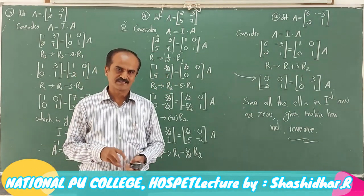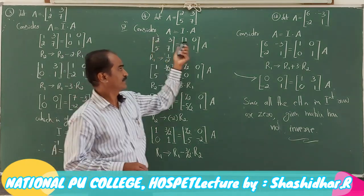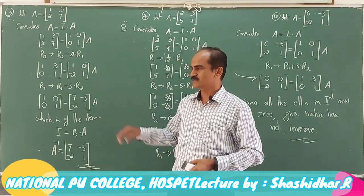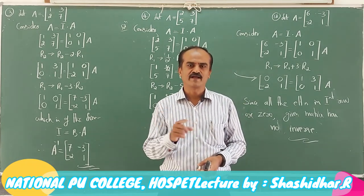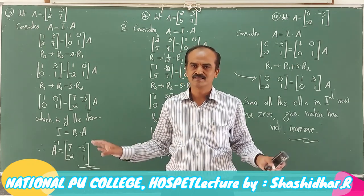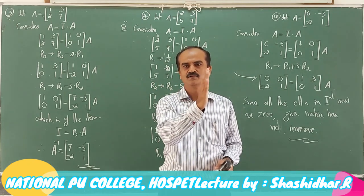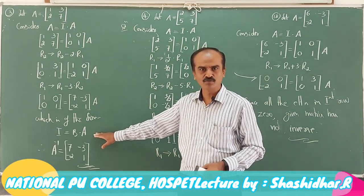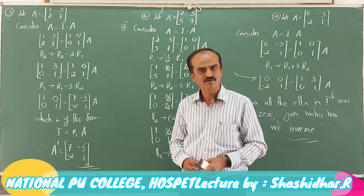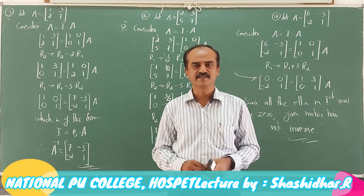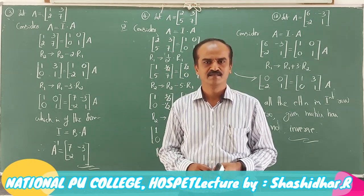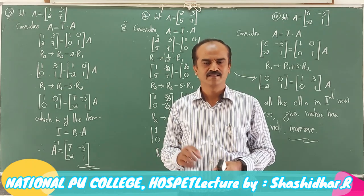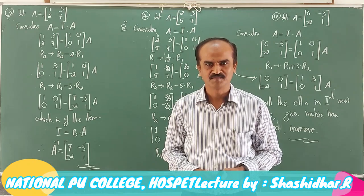The remaining questions in this exercise — numbers 5 to 12 with 2×2 matrices — you try to complete. In the board exam, this question typically carries 3 marks: find the inverse of a matrix by elementary transformations. You have to start with A = I×A, apply a sequence of row operations until you get I = B×A, and that matrix B is the inverse of A. With this, the exercise is completed. In the next class we will discuss miscellaneous examples. Goodbye, thank you.